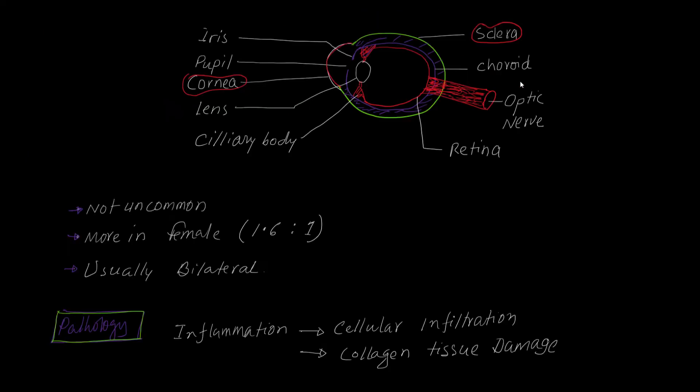This is not an uncommon disease, and it is slightly more common in females. The female-to-male ratio is 1.6 to 1. It is usually bilateral — only very uncommonly found unilaterally.